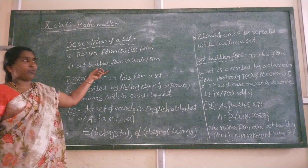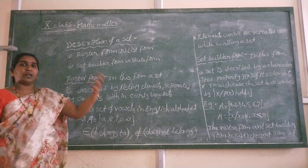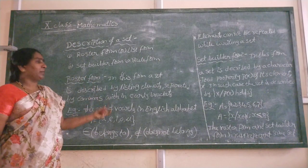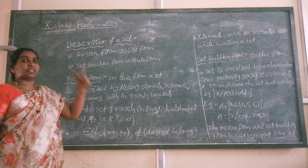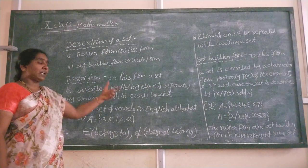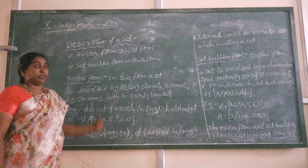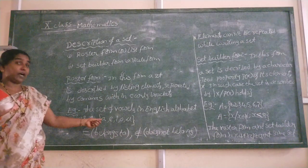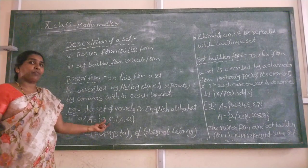What is the meaning of roster form? In this form, a set is described by listing out its elements. Those elements are separated by using commas, and we keep those elements in curly brackets or flower brackets. For example, the set of vowels in English alphabet is represented as A = {A, E, I, O, U}. Those are the elements of the set — those are the vowels of the English alphabet.